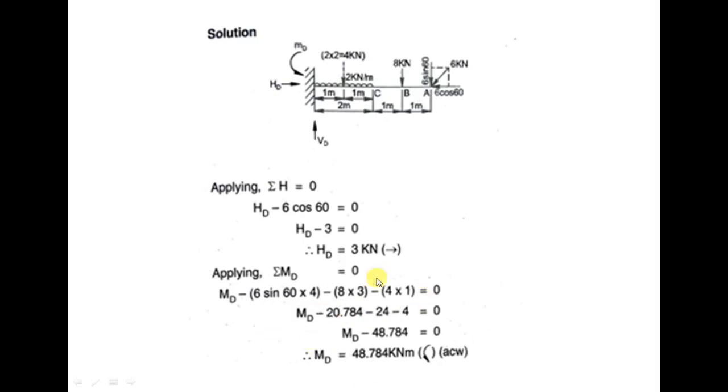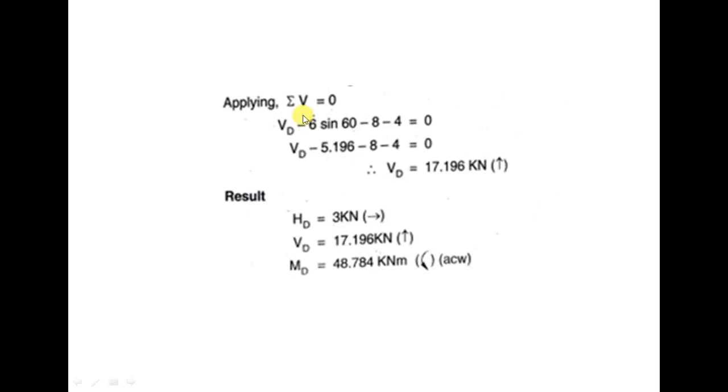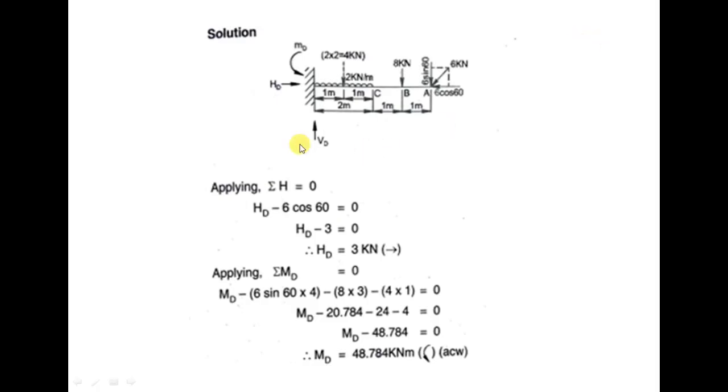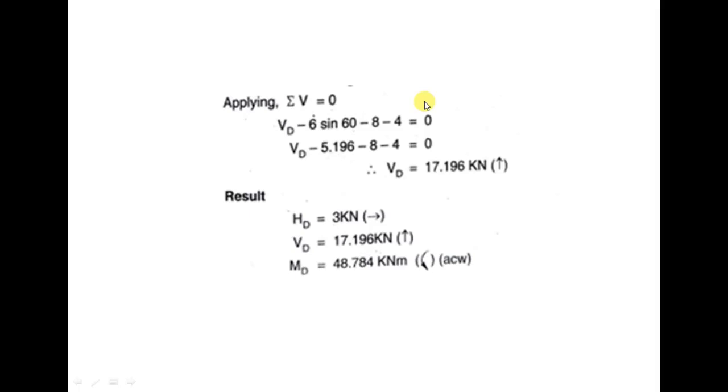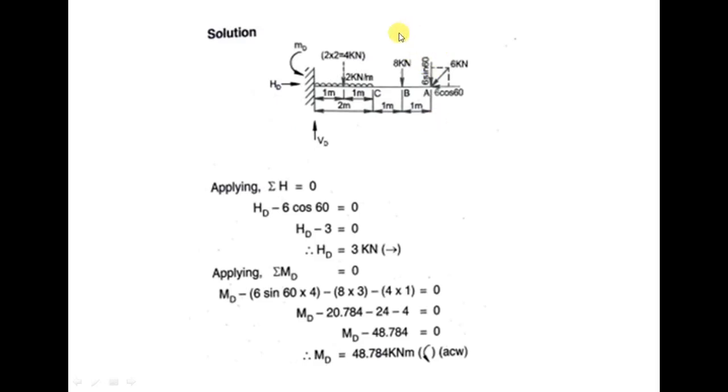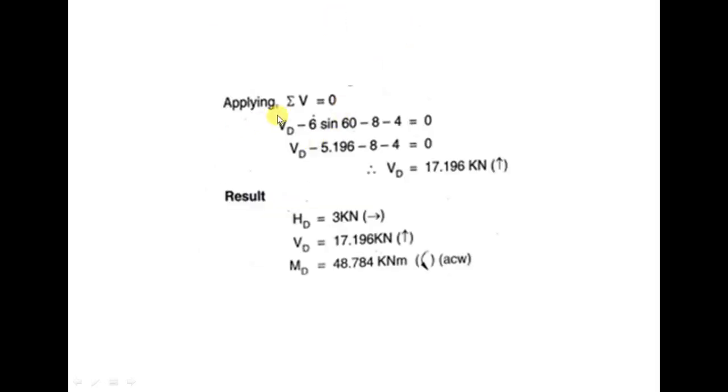Next thing is vertical. Vertical summation, sigma V is equal to 0. V_D minus 6 sin 60 minus 8 minus 4 is equal to 0. V_D minus 5.196 minus 8 minus 4 is equal to 0. So V_D is 17.196 kilonewton. Result: H_D is 3 kilonewton, V_D is 17.196 kilonewton, M_D is 48.784 kilonewton meter.